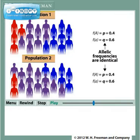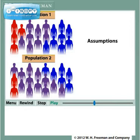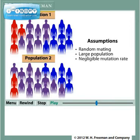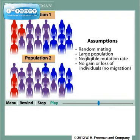These sample populations are derived from populations in which mating is random, population size is large, mutation rate is negligible, and there is no gain or loss of individual members through migration. Under such conditions, the Hardy-Weinberg law describes how reproduction and Mendelian genetics affect the allelic and genotypic frequencies.